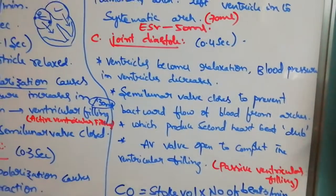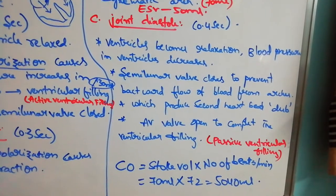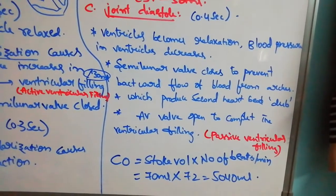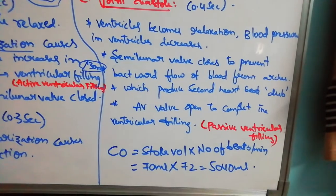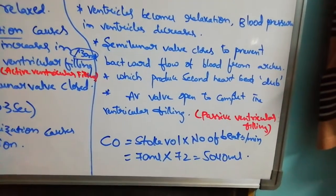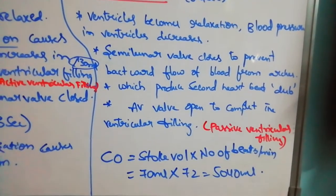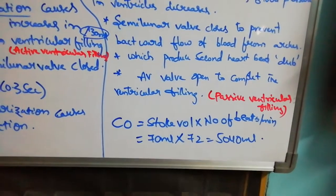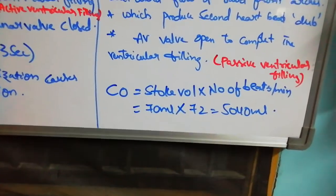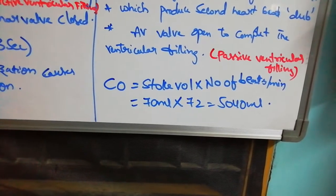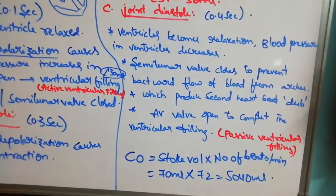Next is joint diastole, lasting 0.4 seconds. No impulses are generated; both atria and ventricles undergo relaxation. Blood pressure decreases, and blood tends to flow backward from the arches. To prevent this, the semilunar valves close, producing the second heart sound 'dub.' Then the AV valves open and passive ventricular filling takes place.